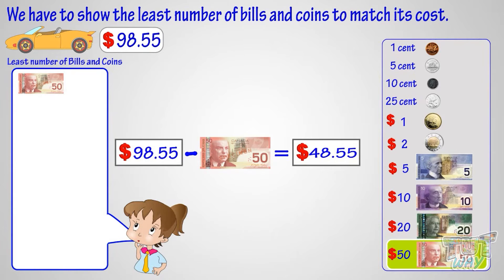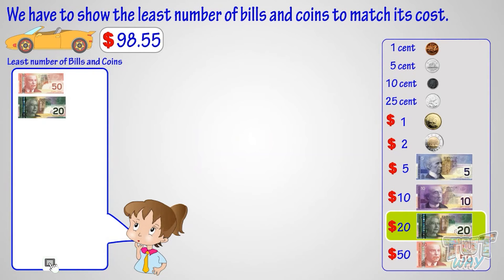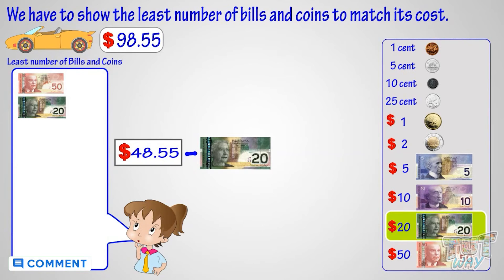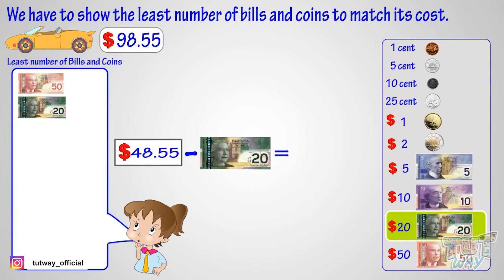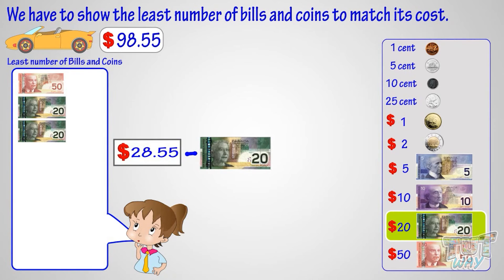This amount is less than a fifty-dollar bill, so the next biggest bill we have is a twenty-dollar bill — take out one twenty-dollar bill. Subtract twenty dollars from forty-eight dollars and fifty-five cents — we are left with twenty-eight dollars and fifty-five cents. Again, this amount is bigger than a twenty-dollar bill, so take out one more twenty-dollar bill. Subtract twenty dollars from twenty-eight dollars and fifty-five cents, and we are left with eight dollars and fifty-five cents.